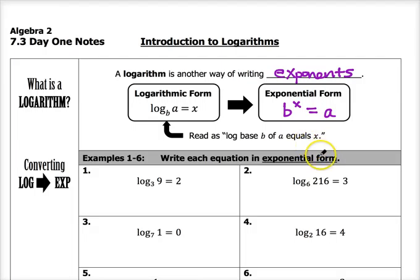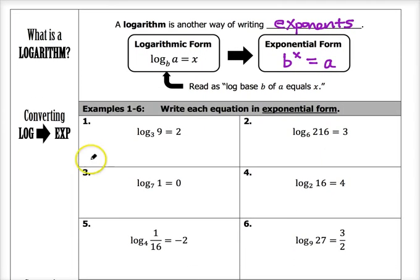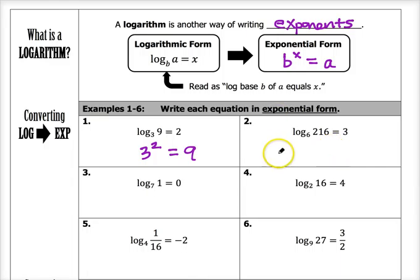We're going to practice converting equations from logarithmic form to exponential form for problems one through six. The first equation, log base 3 of 9 equals 2, means that 3 to the second power — 3 squared — equals 9. Which is true: 3 squared is 9. Number two, log base 6 of 216 equals 3, means that 6 to the third power is equal to 216.